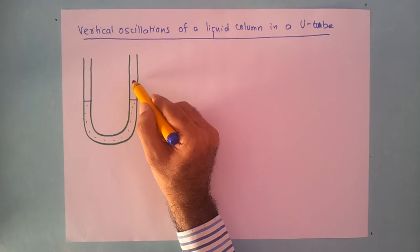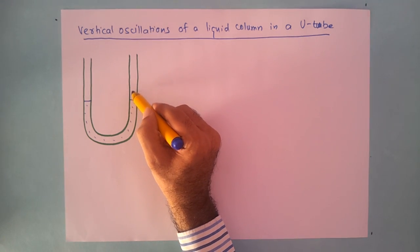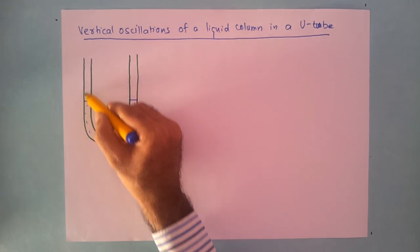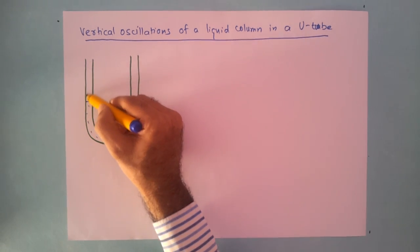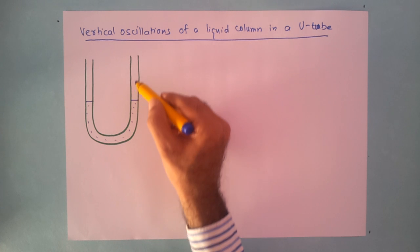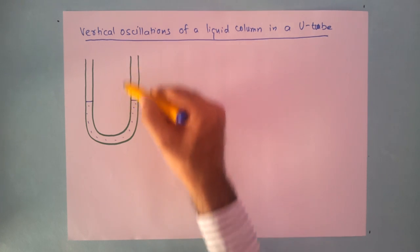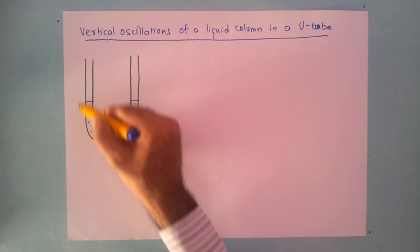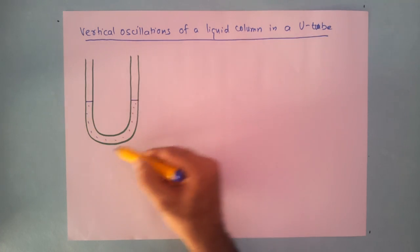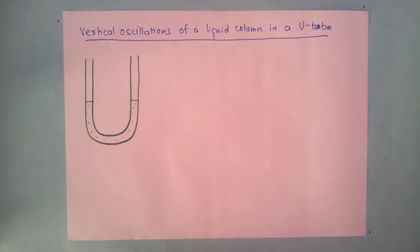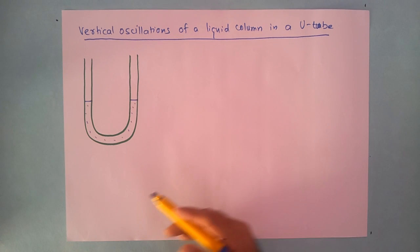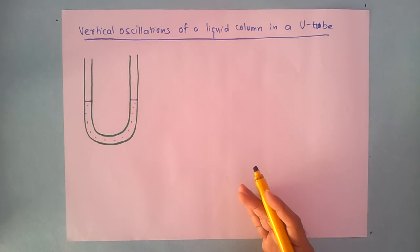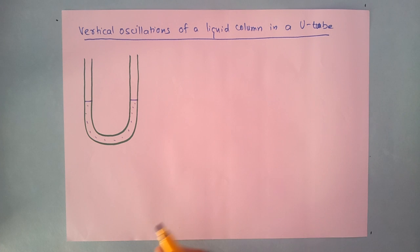By some means we are able to push this liquid down in one column. What will happen is this level will rise — the liquid level will go up on the other side. When you release the pressure or force, this liquid column will start oscillating in the U-tube. The objective of this video is to investigate these oscillations and see whether they are simple harmonic in nature or not.